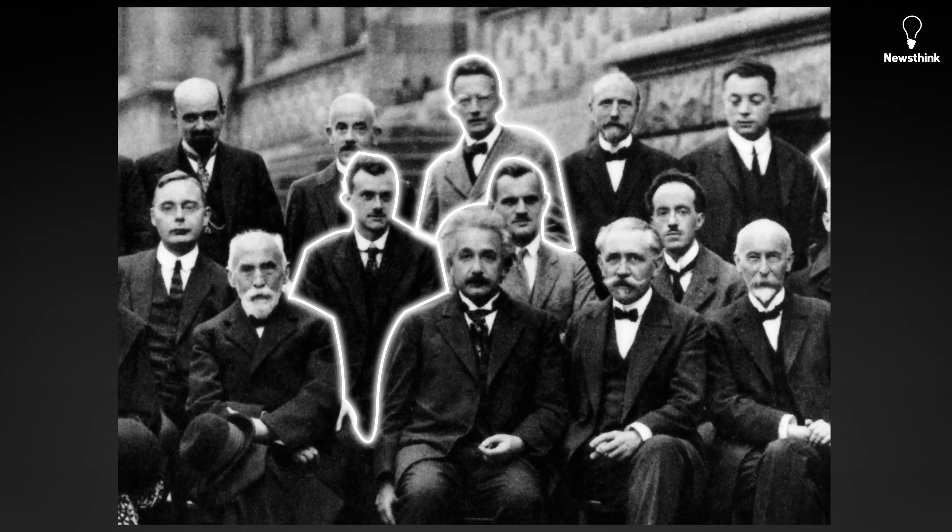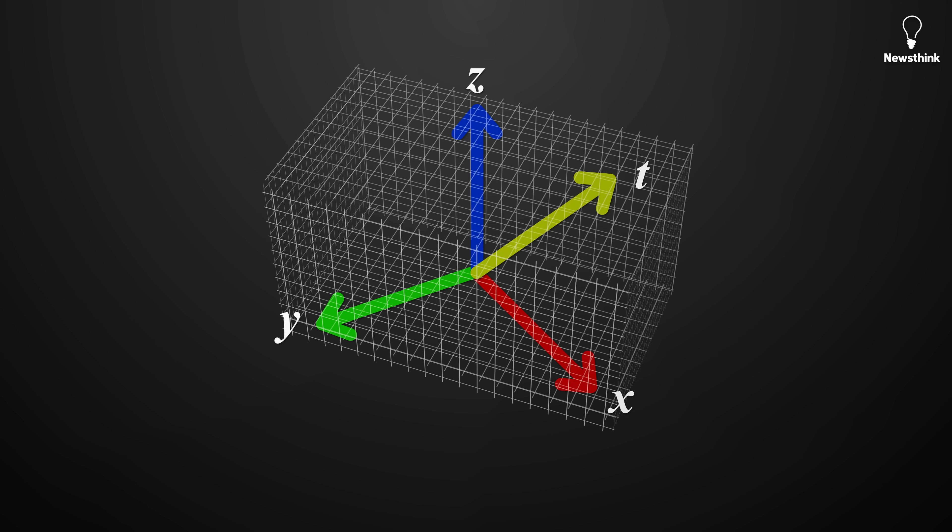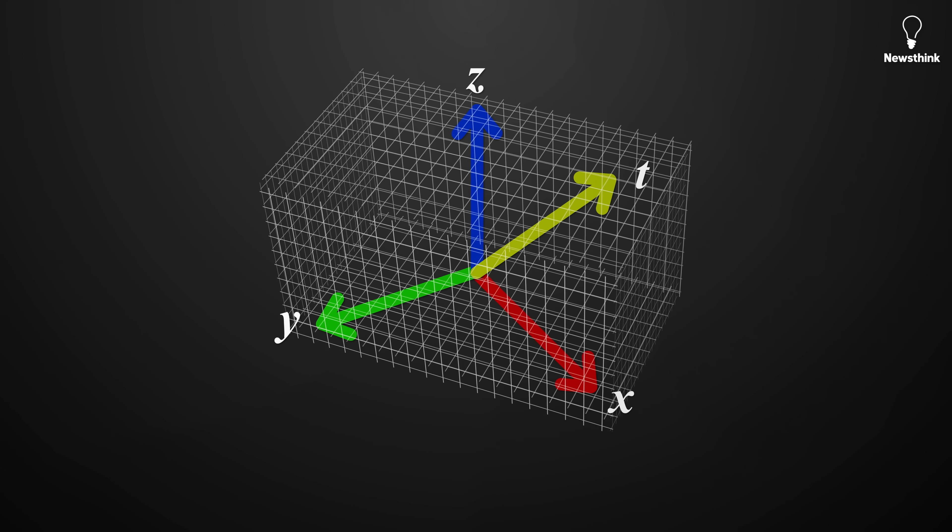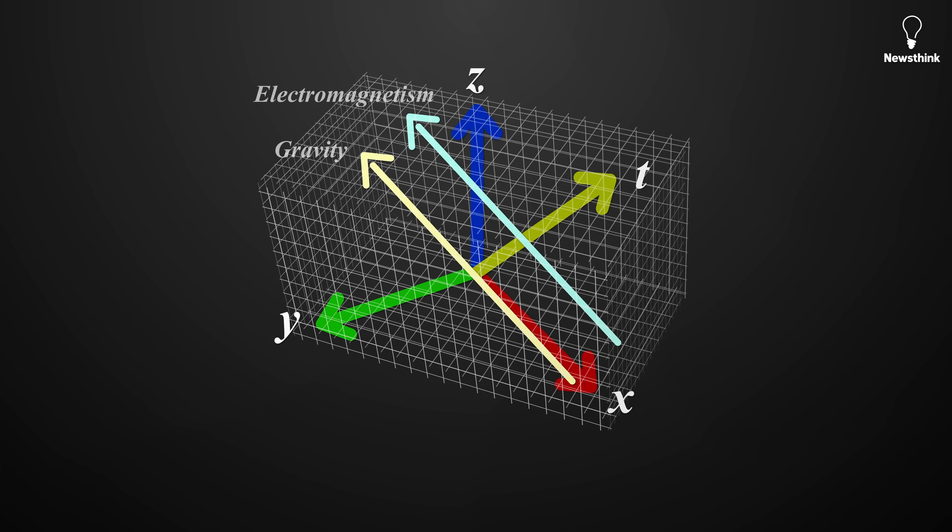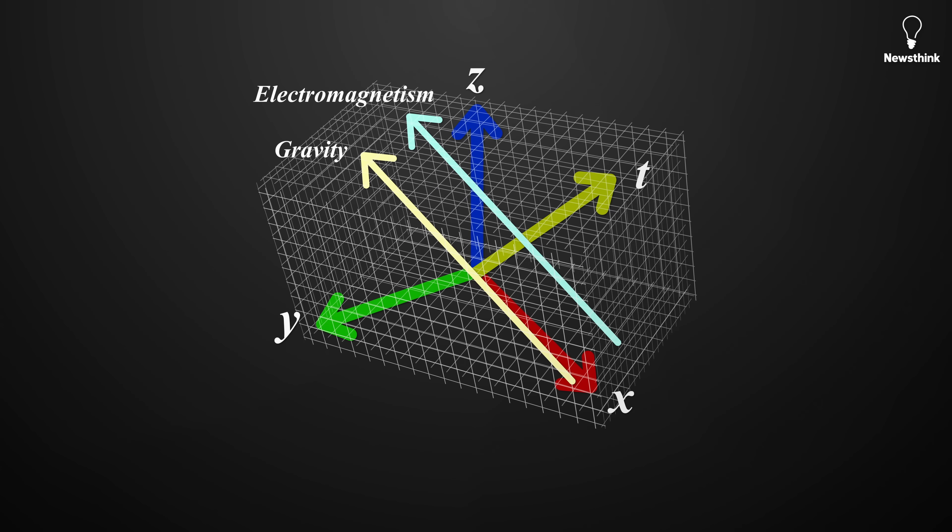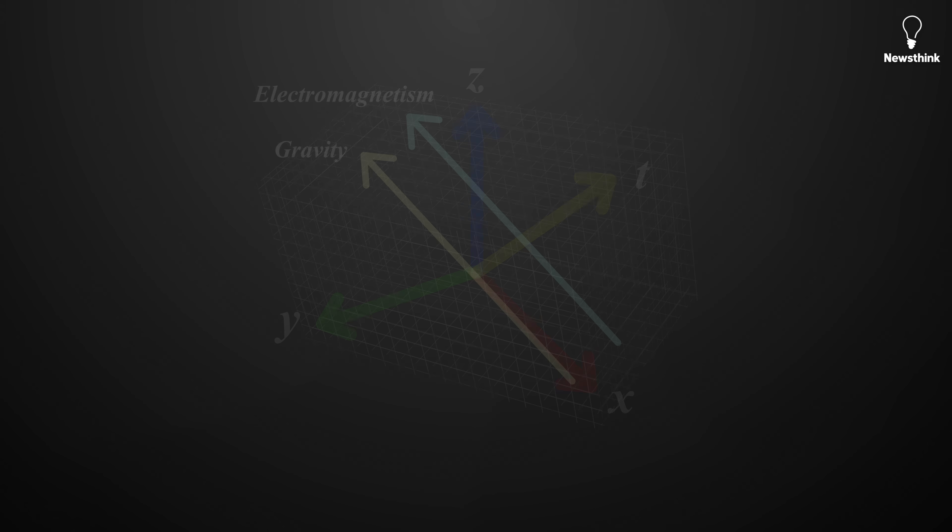Einstein refused to give up. In January 1929, he unveiled yet another version of his unified field theory. This time, he turned to something called distant parallelism. It stayed within the familiar four dimensions of space-time, but added a special rule for how to line up arrows or vectors across far-apart points. The hope was that this new geometry could carry both gravity's pull and electromagnetism's push-and-pull, all within the same space-time, without needing a fifth dimension or changing lengths.